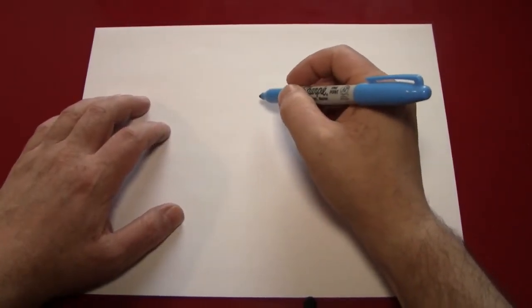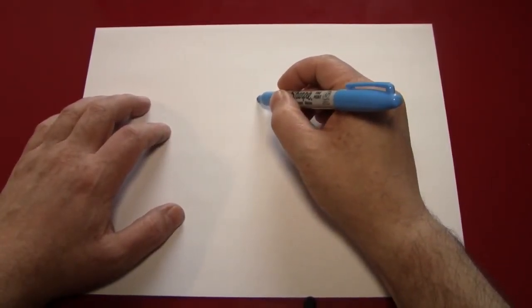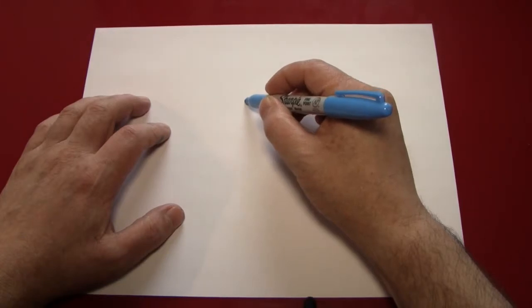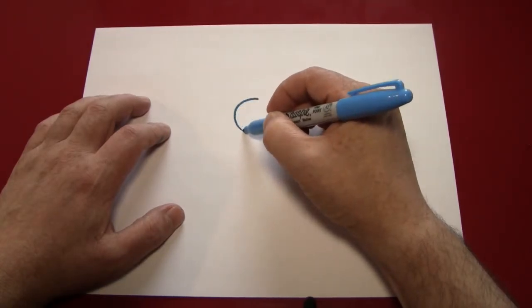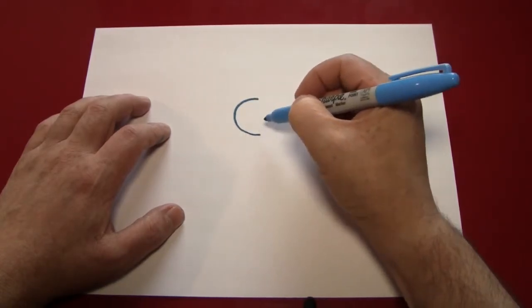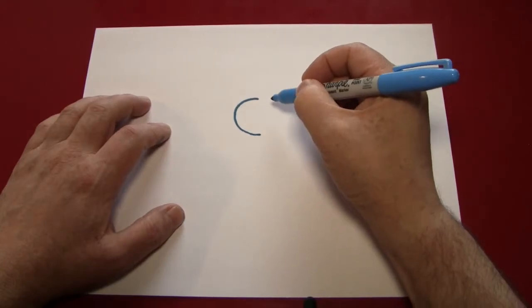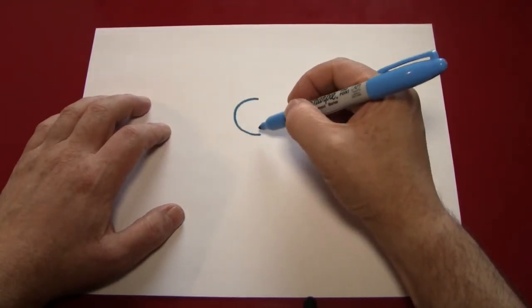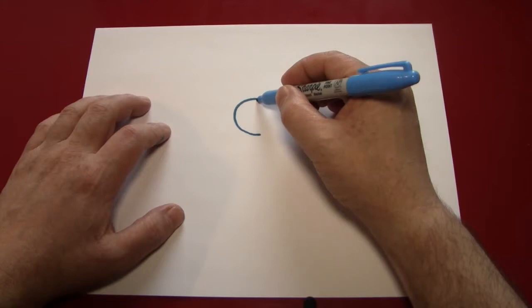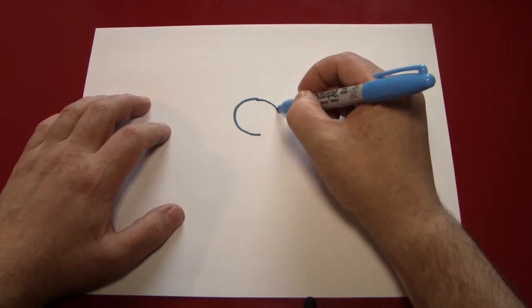So let's do that. First, let's make the center part of the flower. Now if you want to make a very good circle, the way to do it, other than practice, is to make a half circle on one side, and then connect it with a half circle on the other.